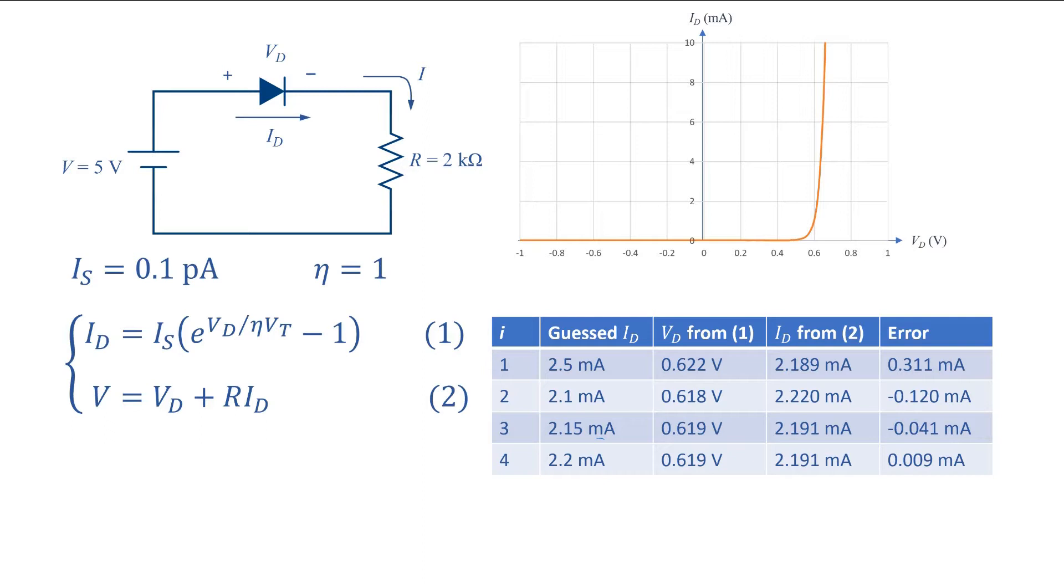I do two more iterations to reduce the error. Using this method I have calculated the precise values for id and vd by three digits after the decimal point.